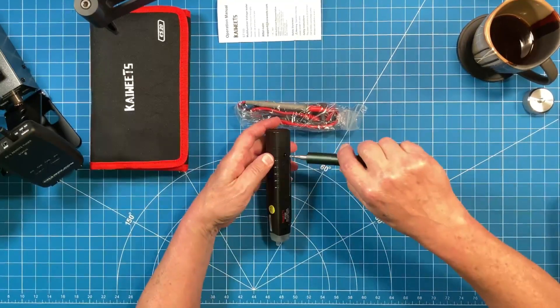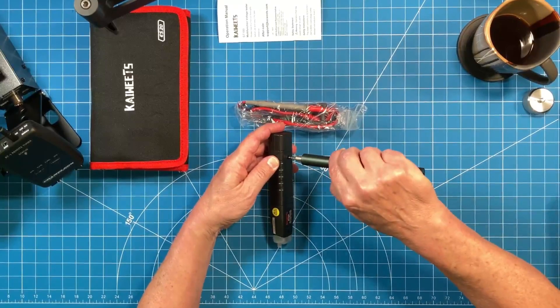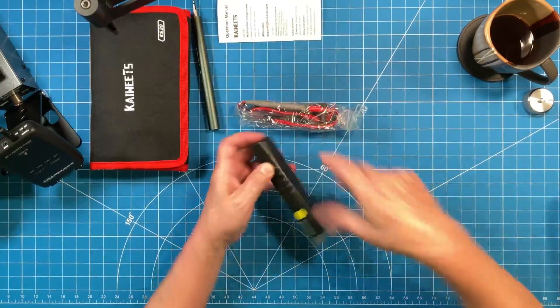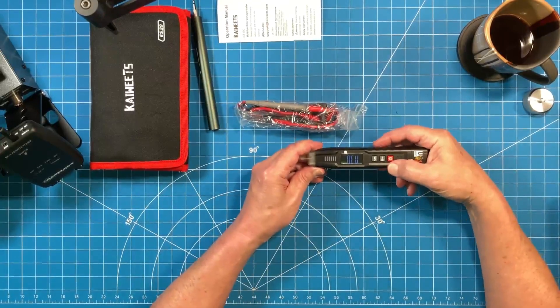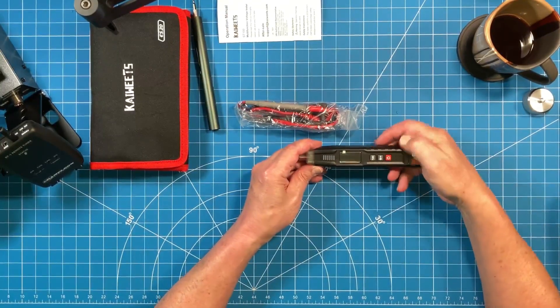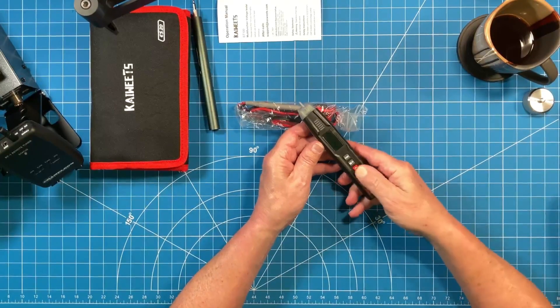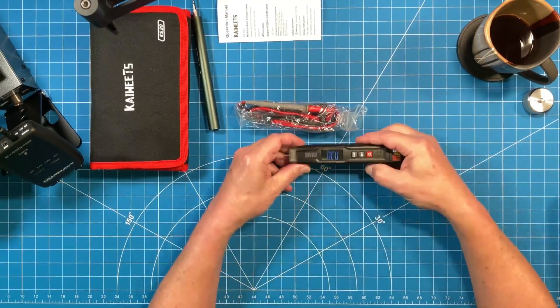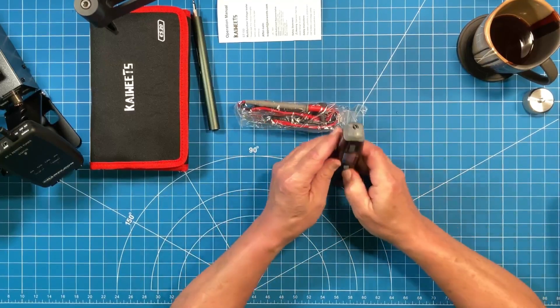Once you put the batteries in correctly, retighten the screw, and it's going to automatically turn on as soon as you put the batteries in. It will go to its default non-contact voltage feature. I've powered the unit off and back on again just to confirm that non-contact voltage is the startup mode, and indeed it is.